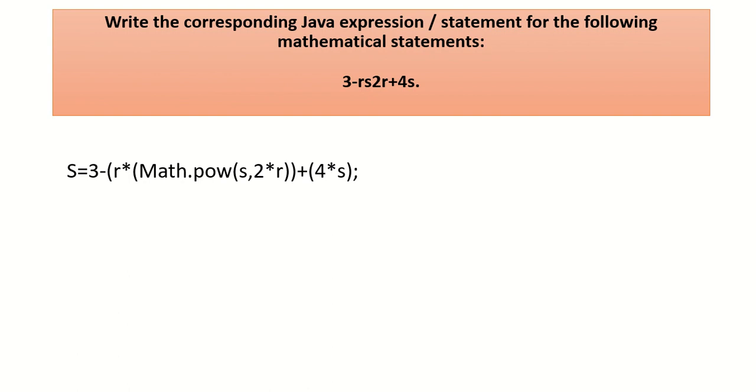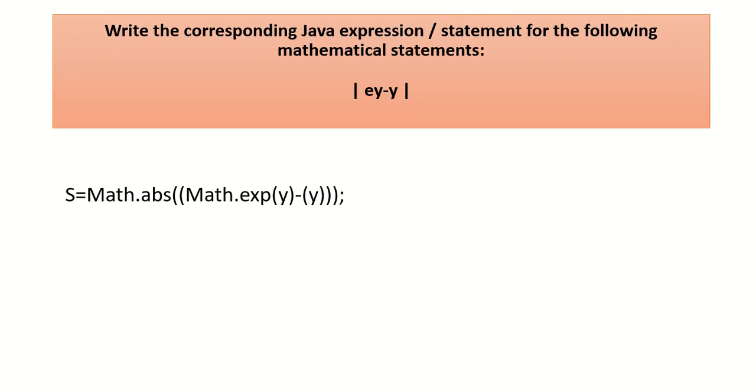The second question is write the corresponding Java statement for 3rs to the power of 2r plus 4s. It is written as 3 into r into Math.pow of s comma 2 into r plus 4 into s.